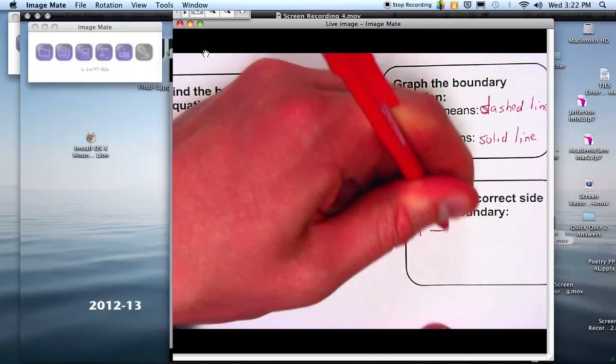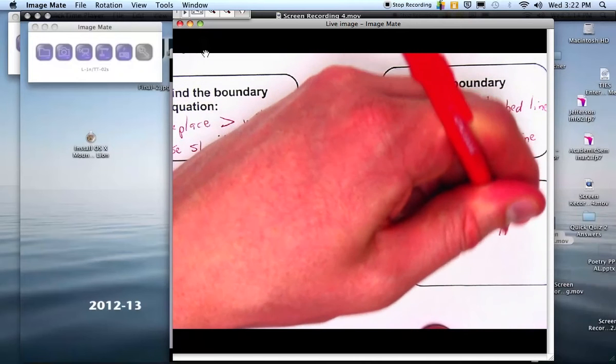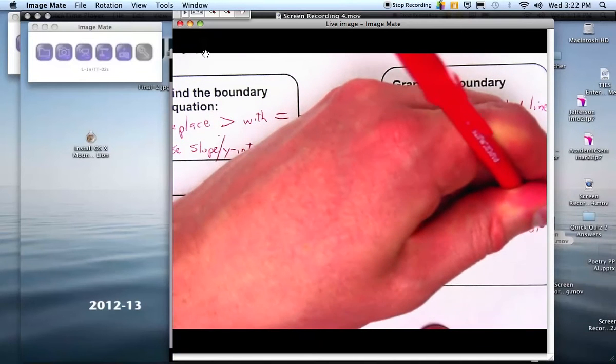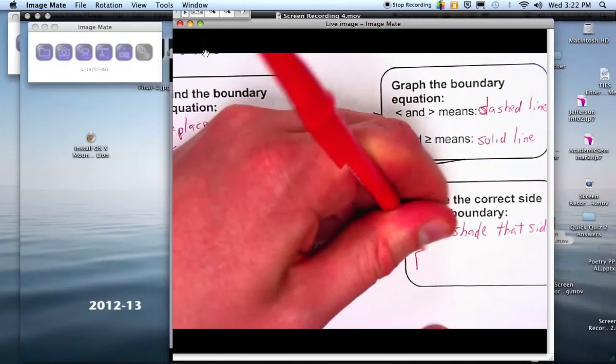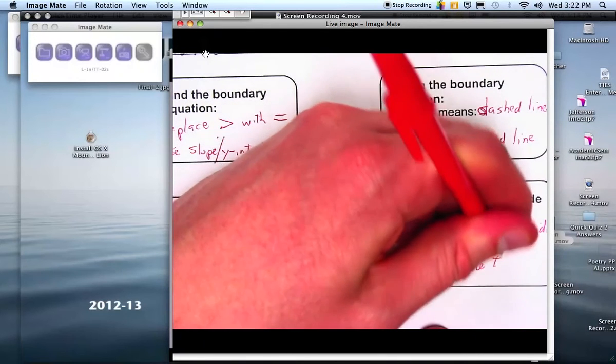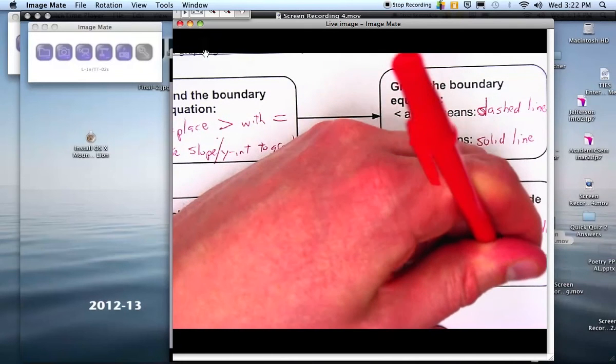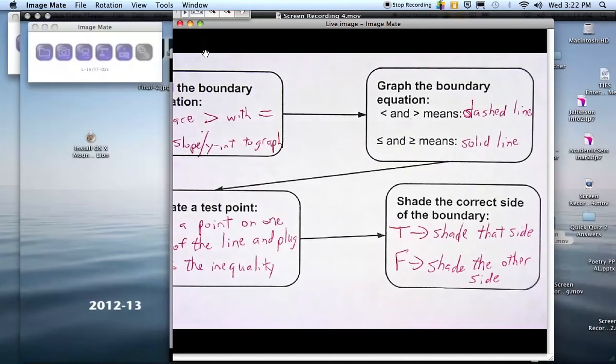If you make it true, you shade the side with the test point. If it's false, you shade the other side. So if it's true, you shade the side that has the boundary point. Sorry, not the boundary point. You shade the side with that test point that you picked out. And if it's false, you shade the other side.